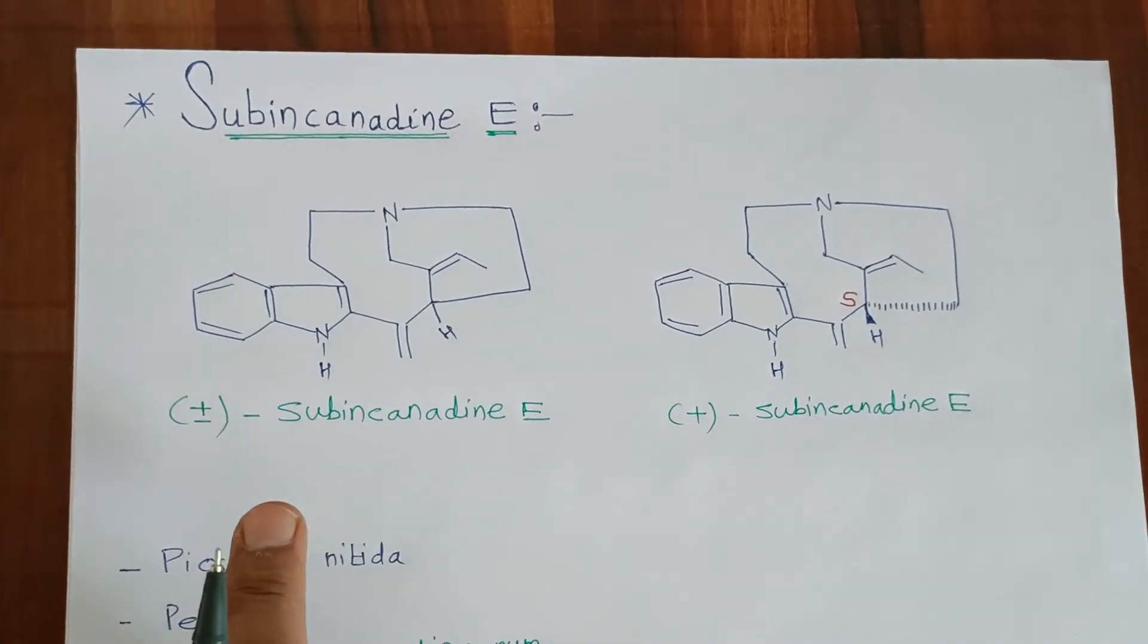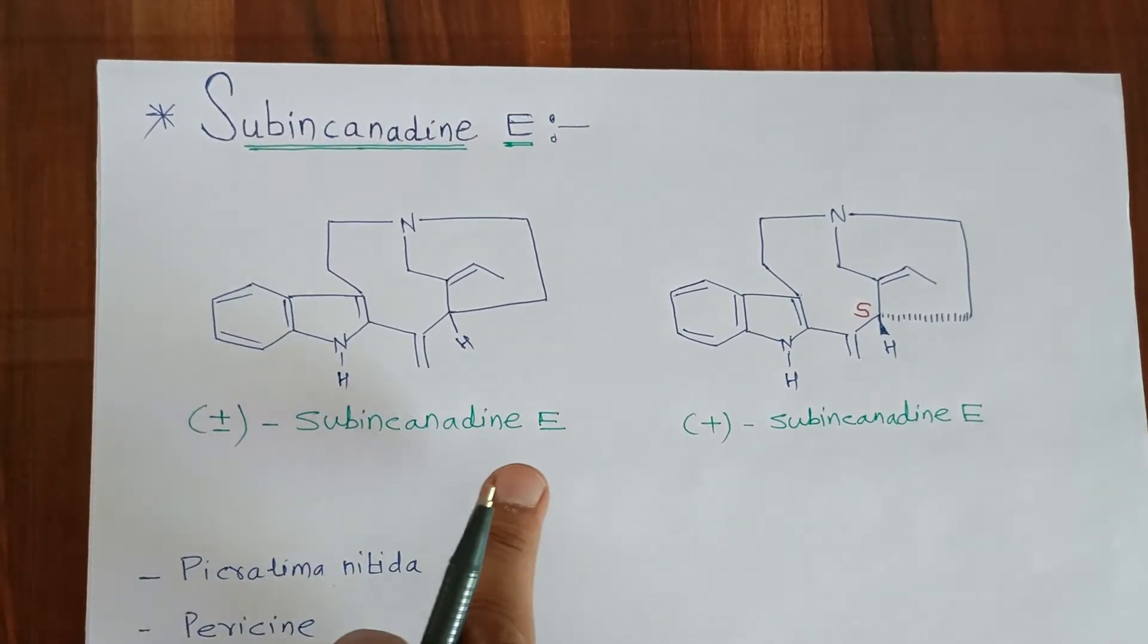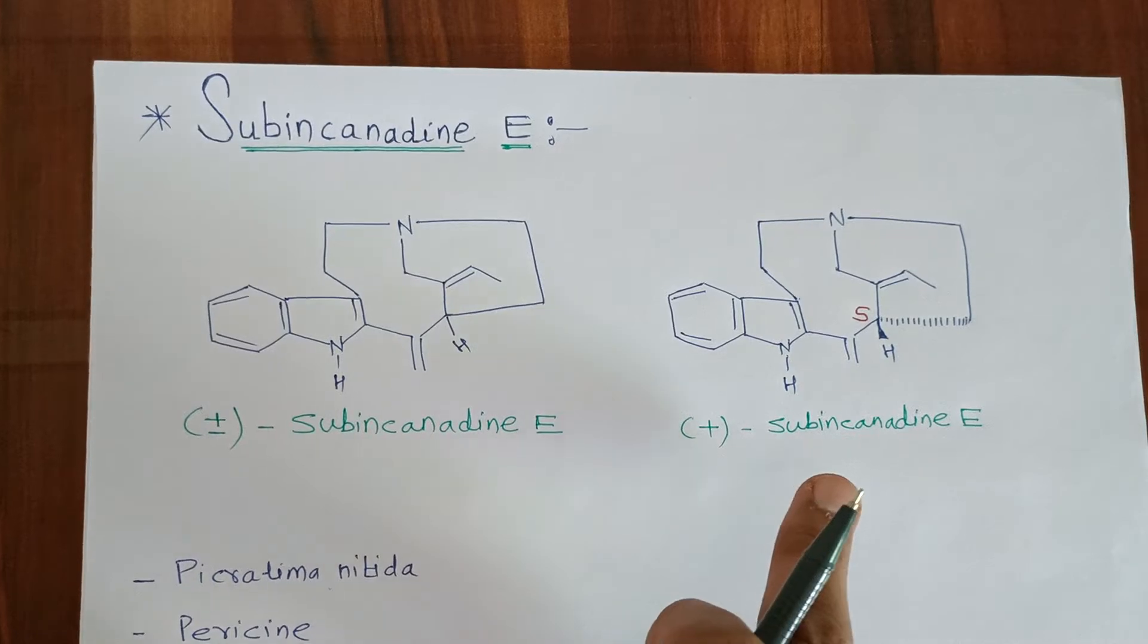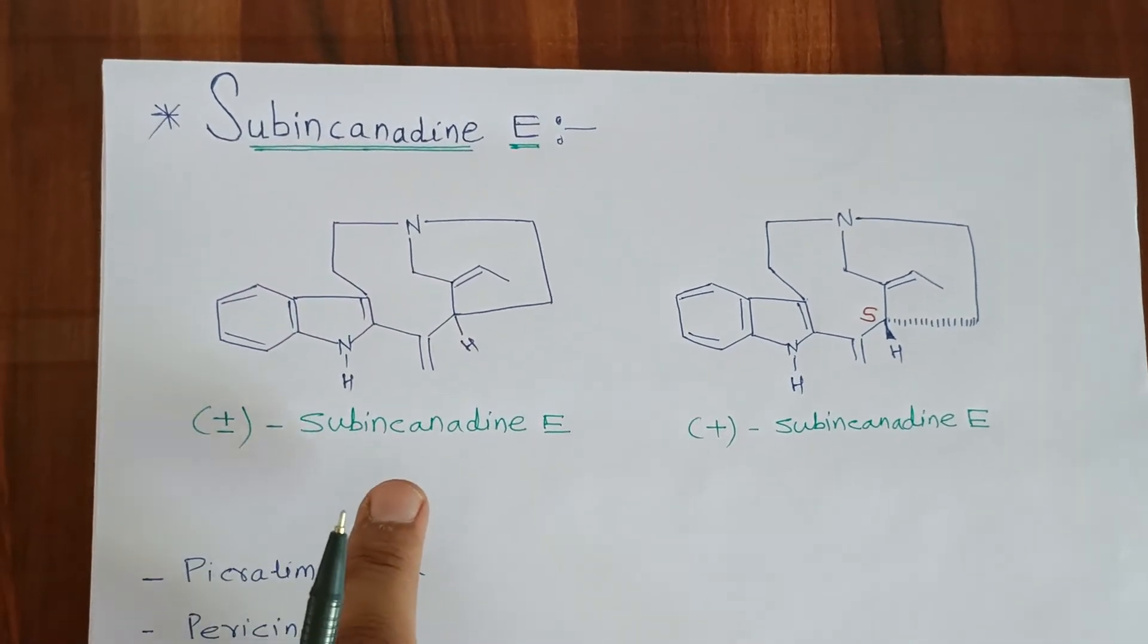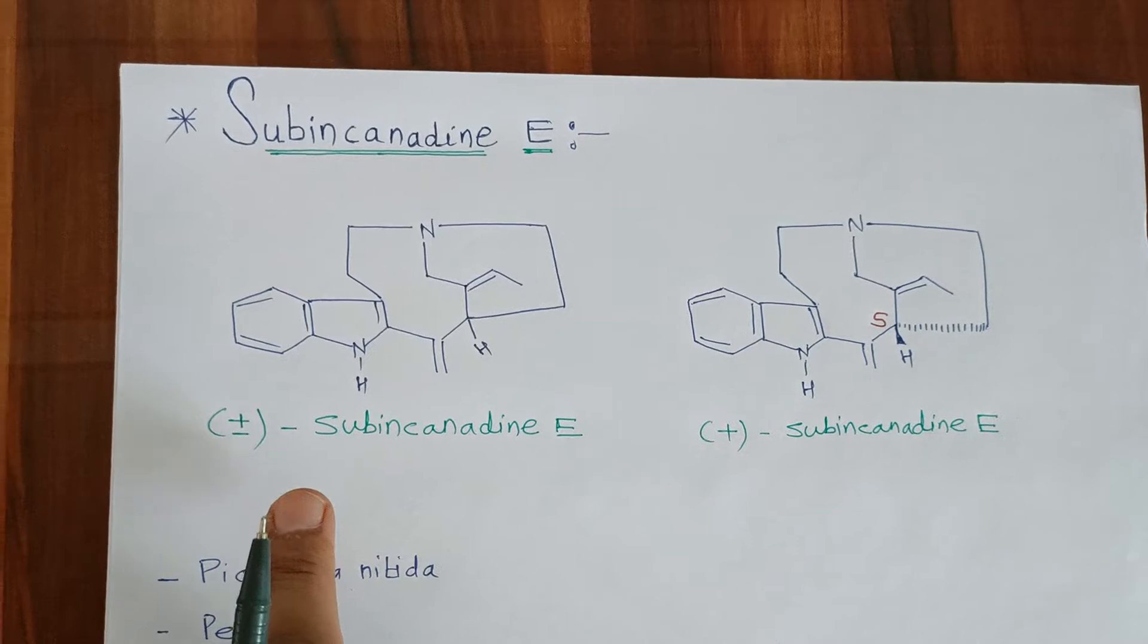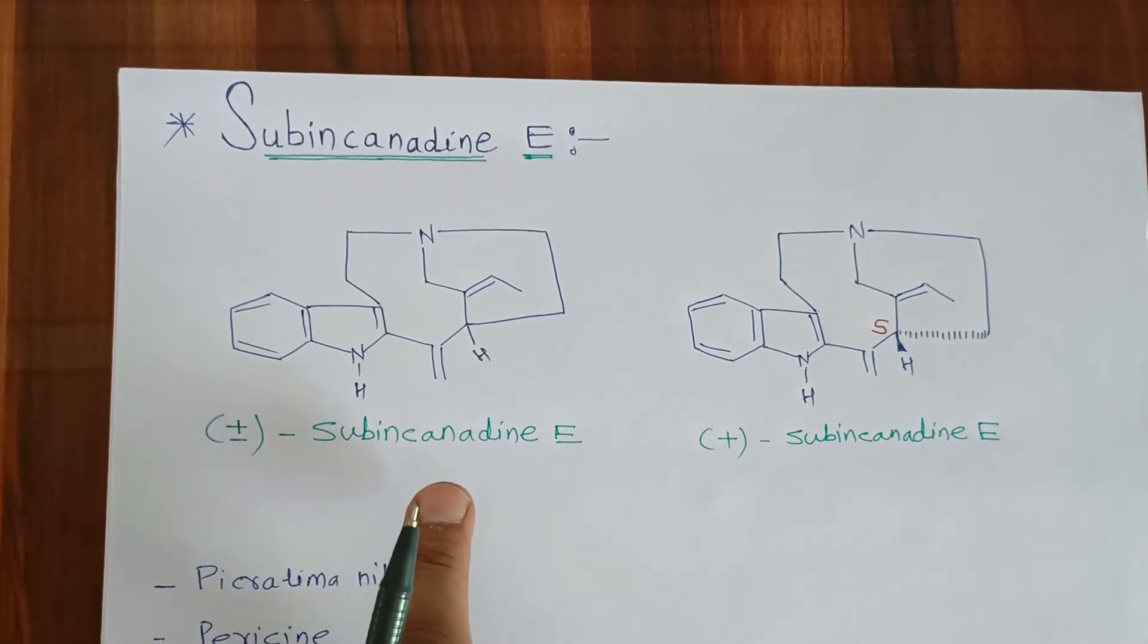So, these are the structures of (±)-Subincanadine E and (+)-Subincanadine E. In case of (±)-Subincanadine E, there is a mixture of plus and minus compounds.